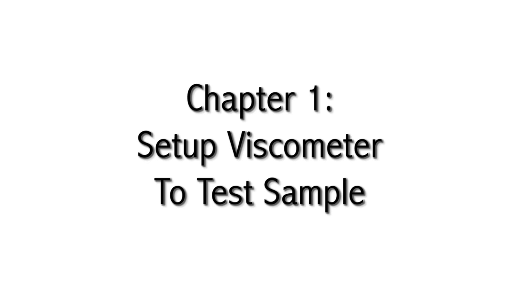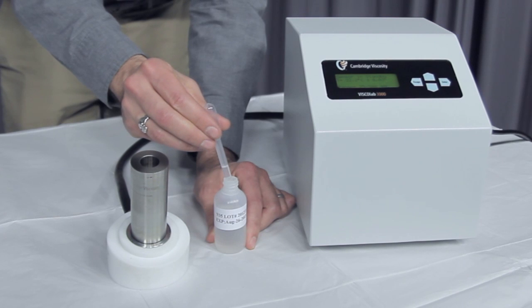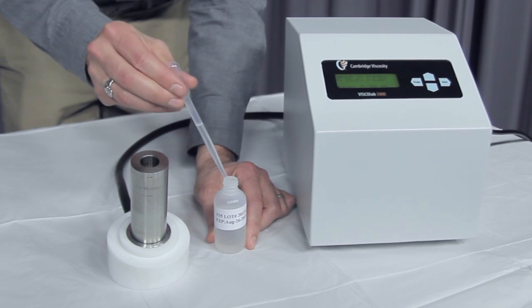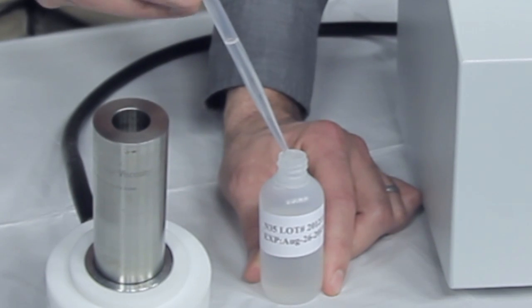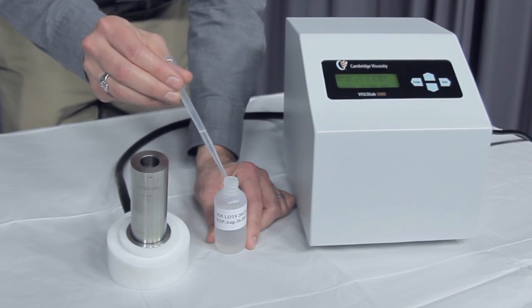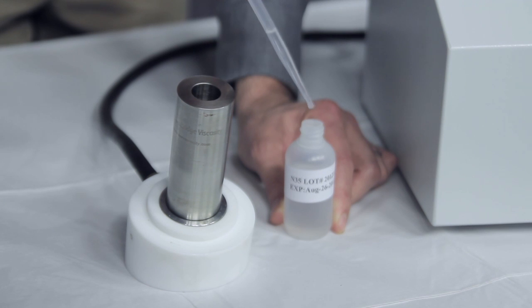Chapter 1: Setting up the Viscometer to test sample. Draw the sample using a pipette. Draw 1 milliliter for the VISCOlab 3000 or draw 1.5 milliliters for the VISCOlab 4000. With the viscometer on, insert the sample into the sensor's measurement chamber.